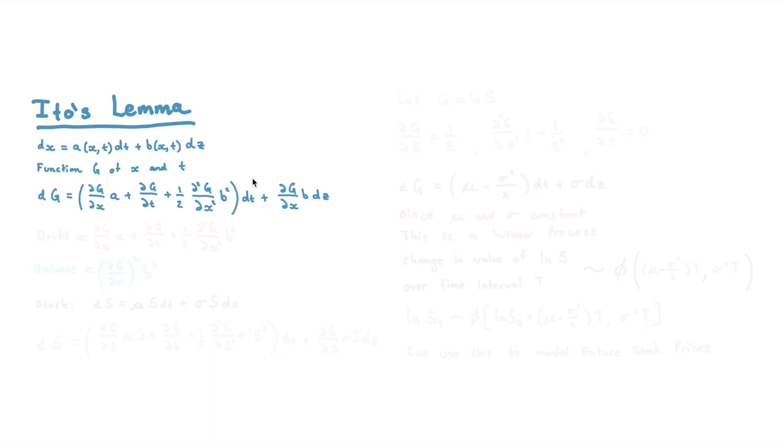it's an Ito's lemma where we have drift is going to be equal to this term over here. And our variance or our dispersion is this term over here. We're taking the squared because this variance is not standard deviation. It's very important you don't get that confused. I sometimes do.